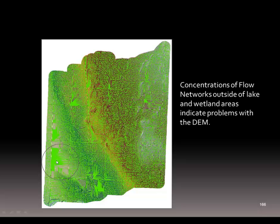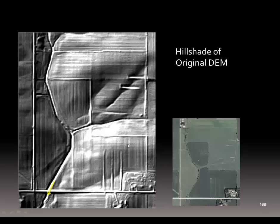The pooling that didn't exist on the landscape is now correctly handled in our flow network. The other approach we need to discuss is if we chose to fix that digital dam by filling the sink — that area that was pooling and collecting the water.